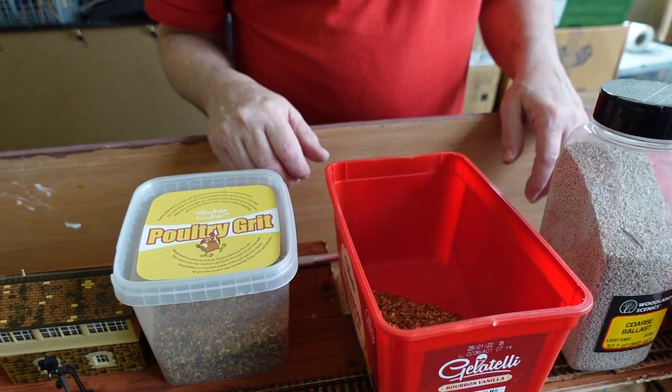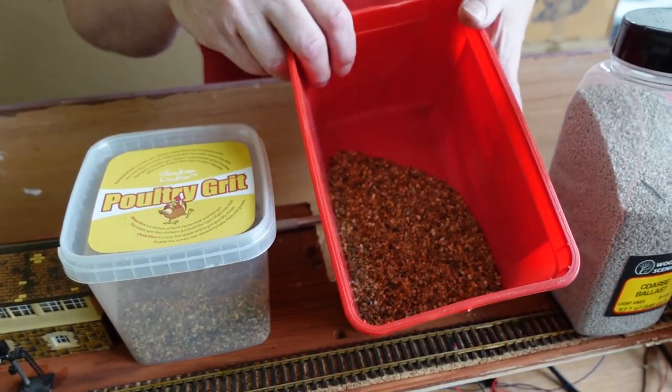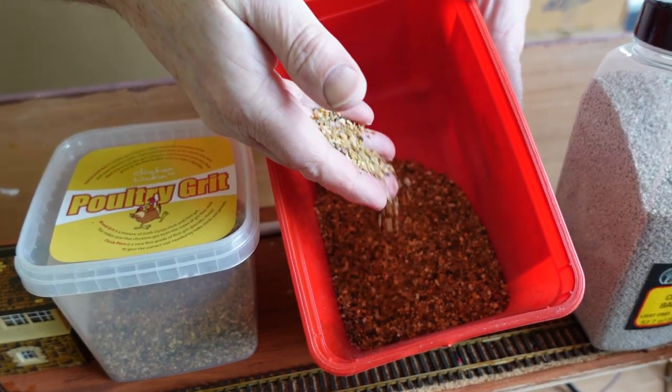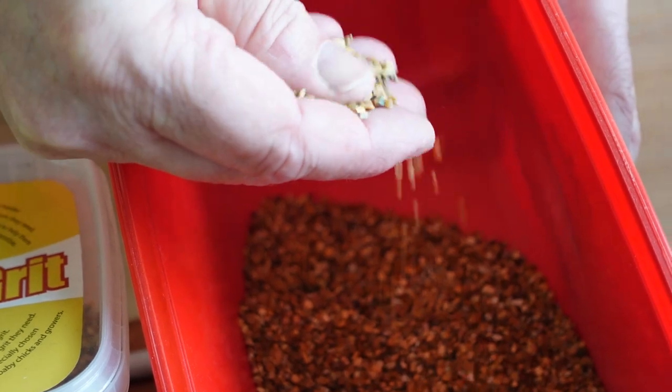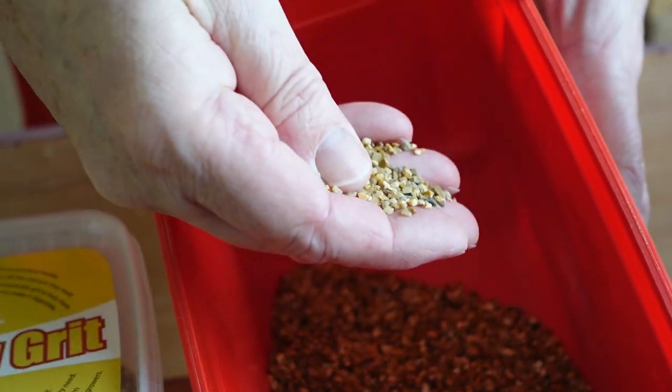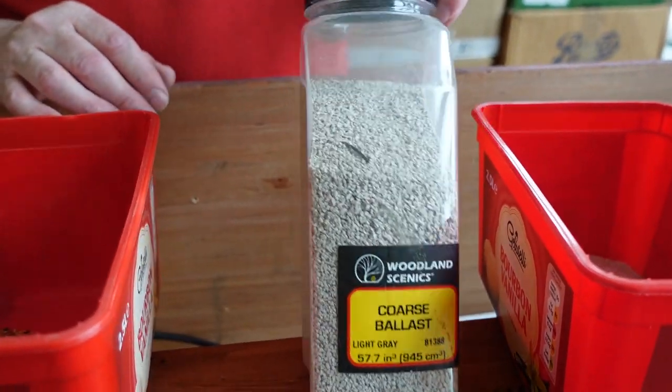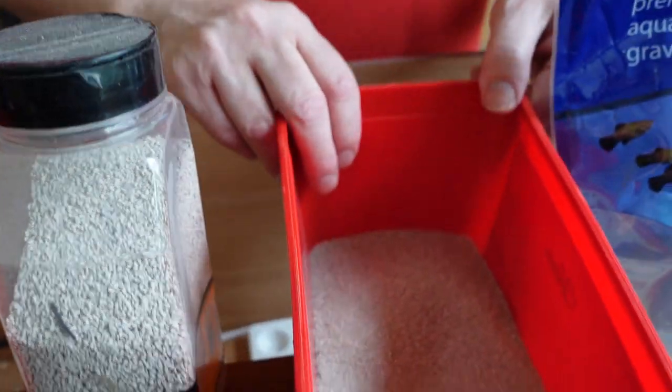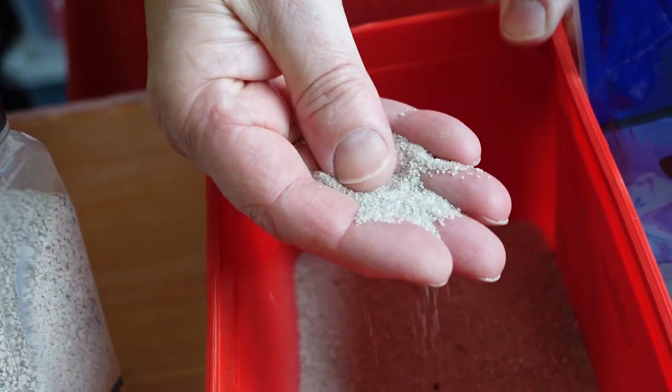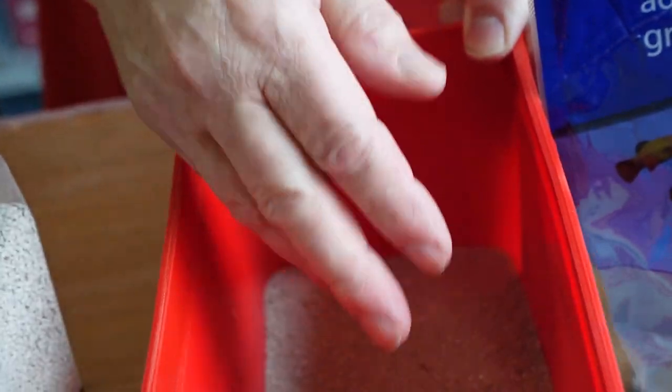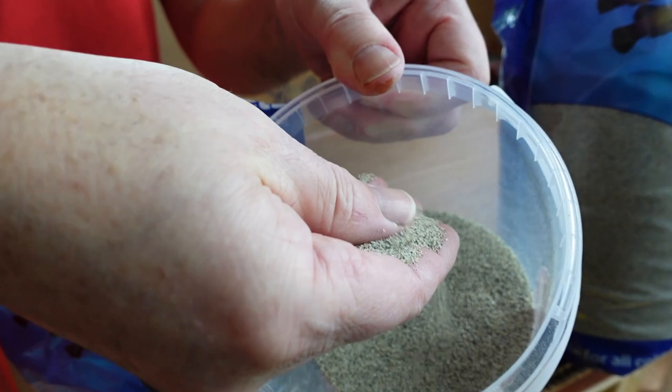Let's have a little chat about what I use for ballast. I use various things. In here we have bird grit, so this is more of a gravelly color. Then we've got the Woodland Scenic coarse ballast, and in here we have some aquarium gravel, which is a lot finer. I think this is better scale-wise for double-O, and then we have just a slightly different color.